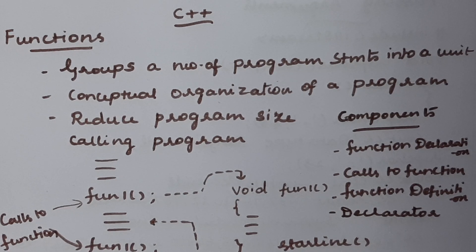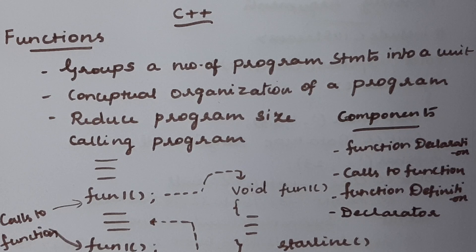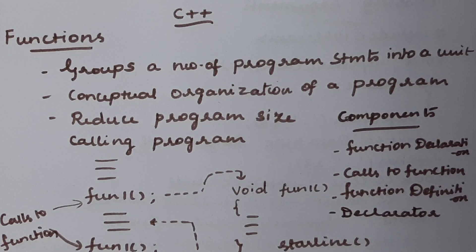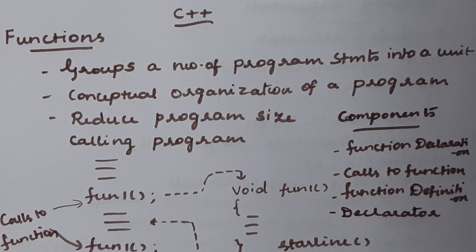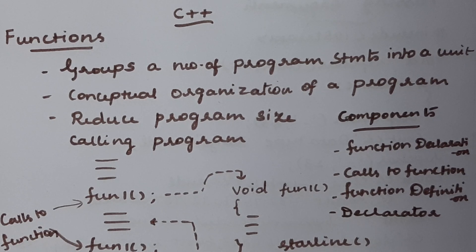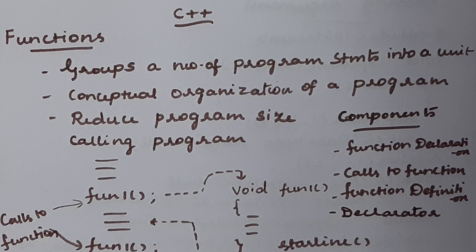User-defined functions are purely defined by the user — the statements inside are devised by the user. Normally the main function calls the user-defined function. Calling is also said to be invoking the function — if you want to execute the statements defined inside a function, you need to call that function. Only with the help of the function calling statement will the compiler execute that function. The main function is the calling function and the user-defined function is the called function.